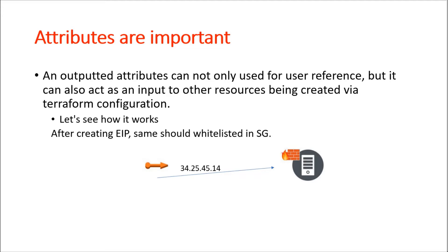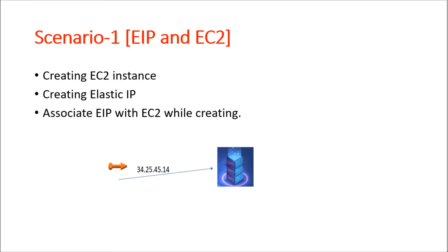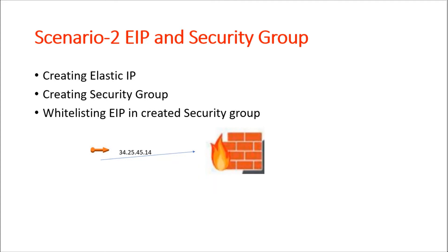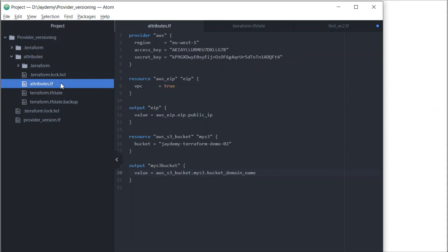We will see how this actually works. After creating an Elastic IP, the same should be whitelisted in a security group. For today's session we have two scenarios. Scenario one: creating an EC2 instance and creating an Elastic IP, then associating the Elastic IP with the EC2 instance while creating it. Scenario two: Elastic IP creation and security group creation — after creating both resources within the same configuration, we make sure the Elastic IP is whitelisted in the security group.